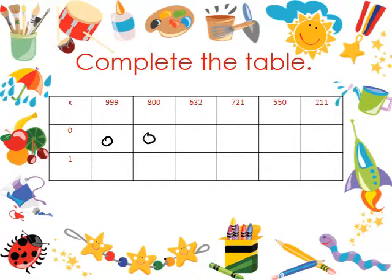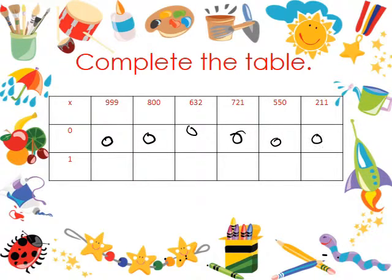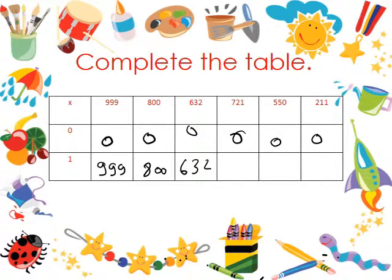0 times 800: 0. 0 times 721: 0. 0 times 550: 0. 0 times 211: 0. 1 times 999: 999. 1 times 800: 800. 1 times 632: 632. 1 times 721: 721. 1 times 550: 550. 1 times 211: 211.